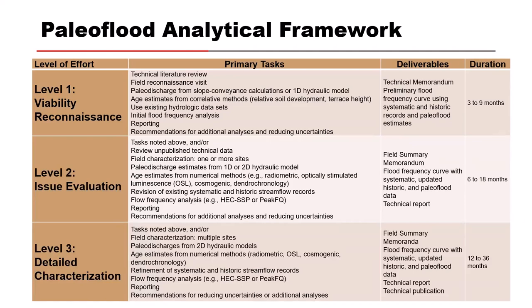We customize each one according to our project needs, the specific site and watershed conditions, and the risk decision framework. At Level 1 we have large uncertainty — the data is useful to determine the value for flood frequency but is not sufficient to actually apply findings into a quantitative risk analysis. Level 1 uses simple calculations like slope, conveyance, or 1D hydraulic models, a quick field reconnaissance site visit, and correlative age dating using relative ages from the surrounding geology.